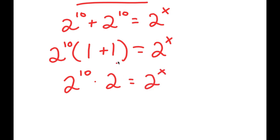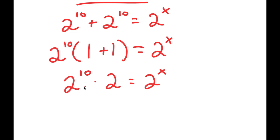A simpler way of doing this: instead of factoring, we have two 2 to the power of 10s here, and anything added by itself is the same thing as that number times 2. So we could have just said 2 to the power of 10 times 2 at the beginning instead of factoring it out.